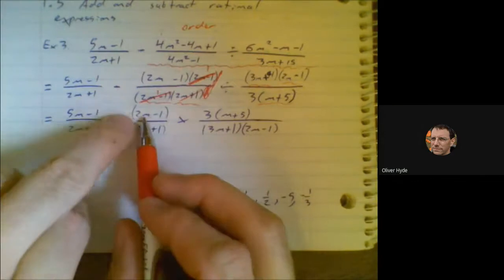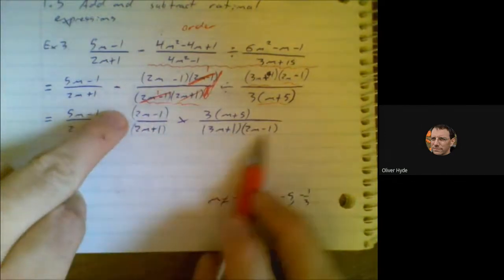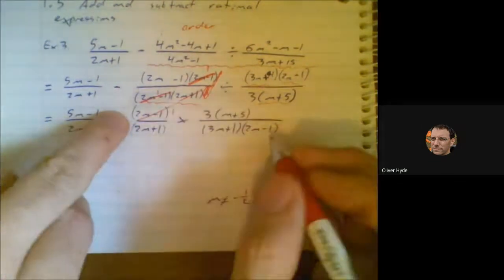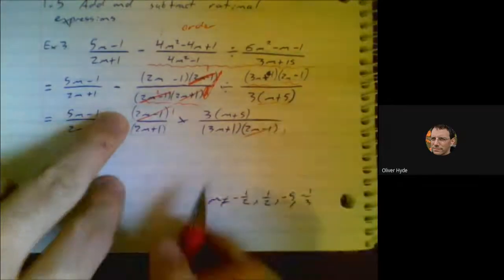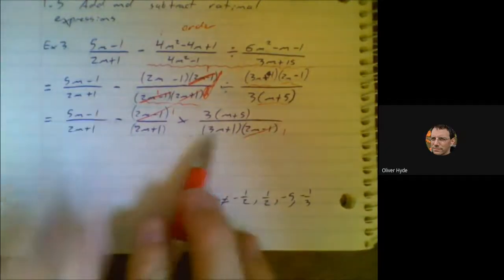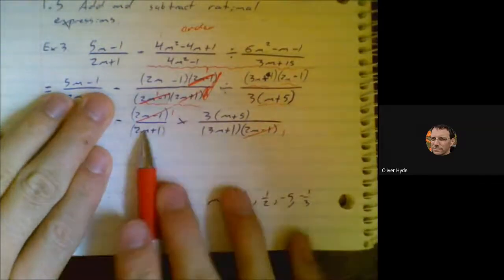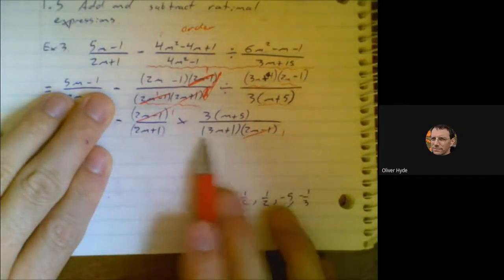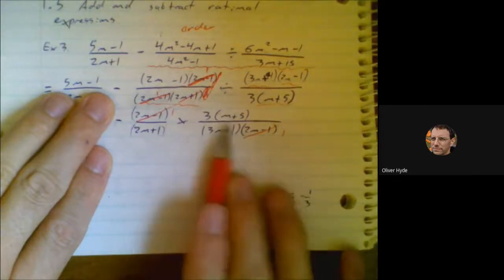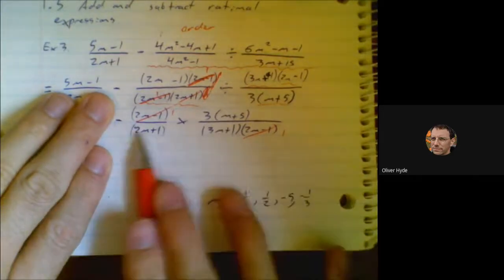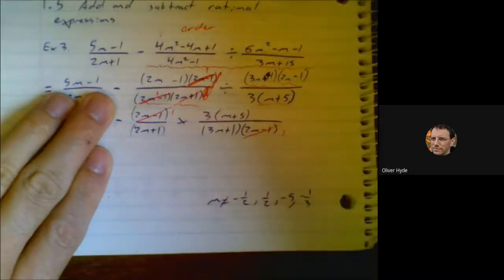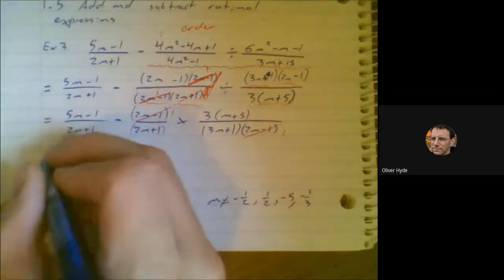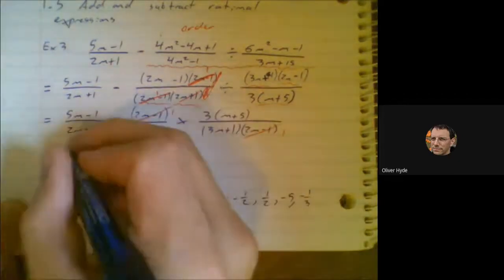Instead of mushing it all together and multiplying it all out, let's look for shared factors. I have a factor of 2m minus 1 in the numerator. Is there a factor of 2m minus 1 in the denominator? Oh, you betcha. Is there a factor of 3 in the denominator? Notice I'm only looking in these two terms because those are the only two terms that are being multiplied. No, I'm not seeing a factor of 3. There's a 3 there, but it's not a factor of 3. There's a factor of 3m plus 1. Is there a factor of m plus 5? No.